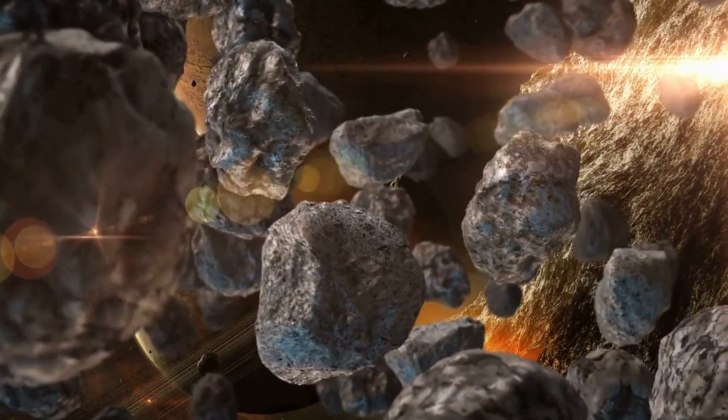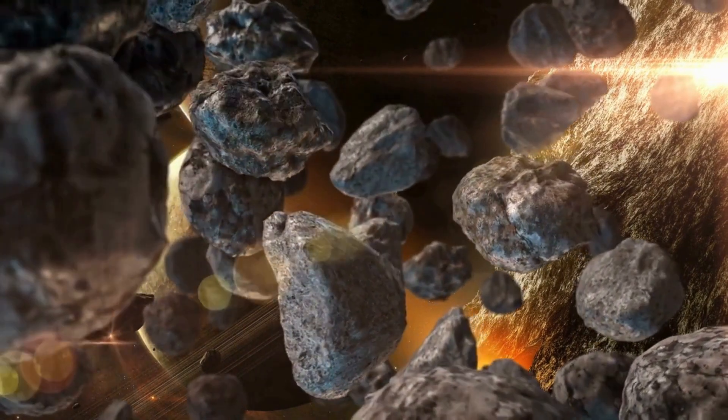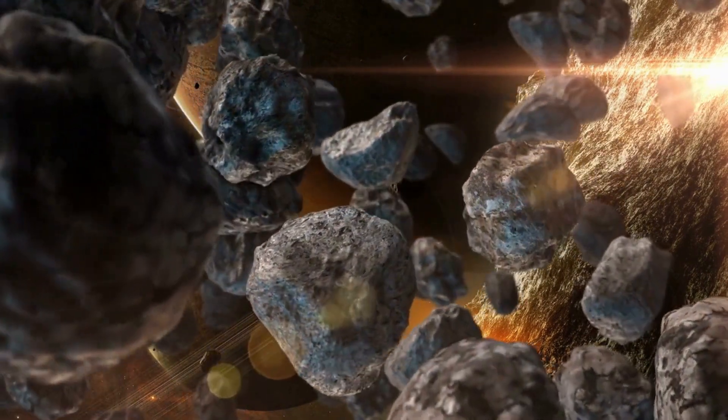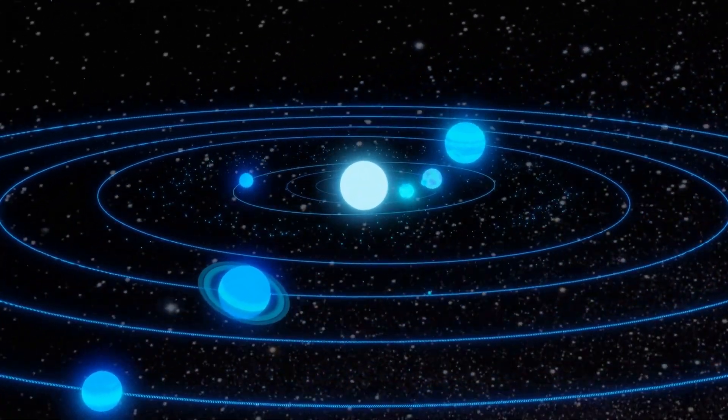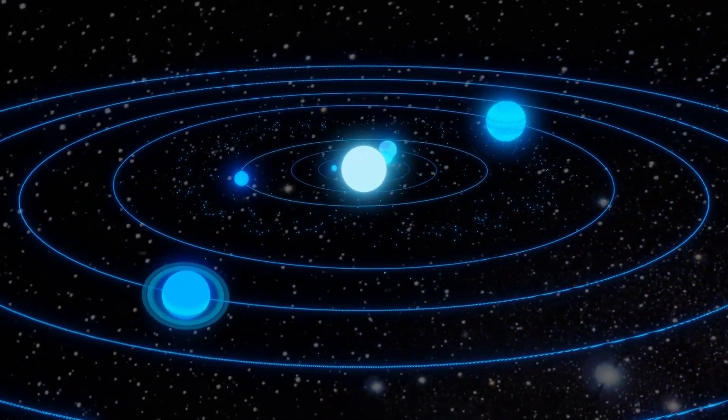The Kuiper Belt is believed to be the source of many short period comets, which are believed to originate from the scattered disk, a region of the outer solar system that extends from the Kuiper Belt to about 100 astronomical units from the sun.